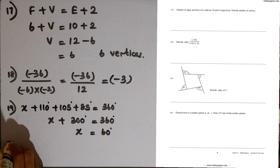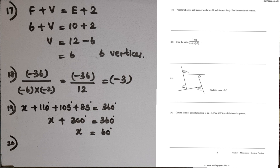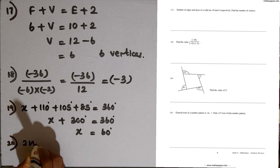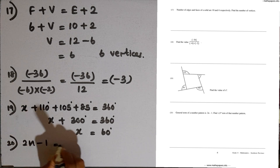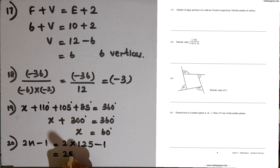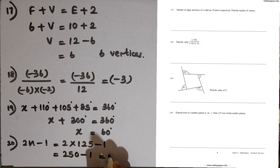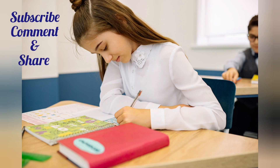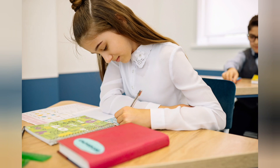Question number 20: the general term of a number pattern is 2n minus 1. Find the 125th term. We substitute 125 for n: 2 multiplied by 125 minus 1 equals 250 minus 1, which equals 249.